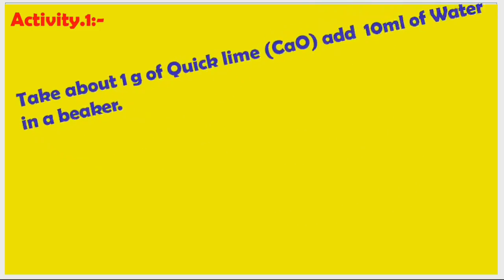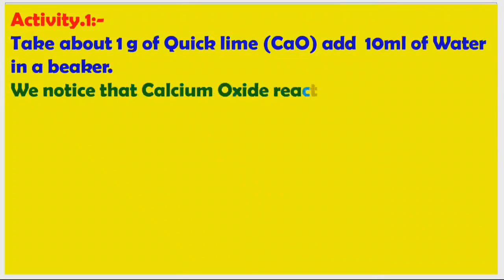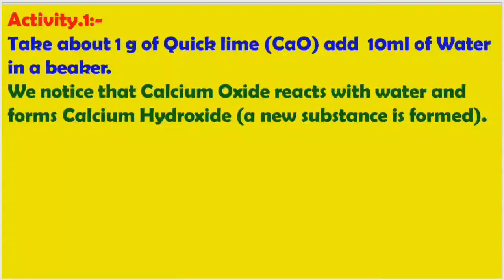Now we will see activities. Activity 1: Take about 1 gram of quick lime — chemical formula for quick lime is calcium oxide, CaO. Add 10 ml of water in a beaker. We notice that calcium oxide reacts with water and forms calcium hydroxide. We can observe that a new substance is formed — that is calcium hydroxide.